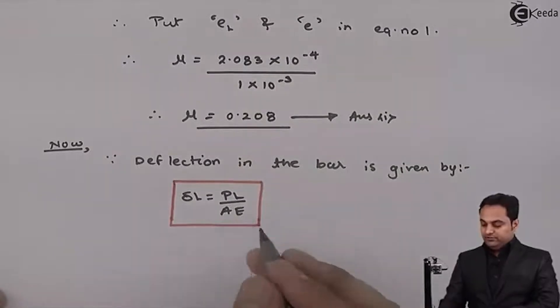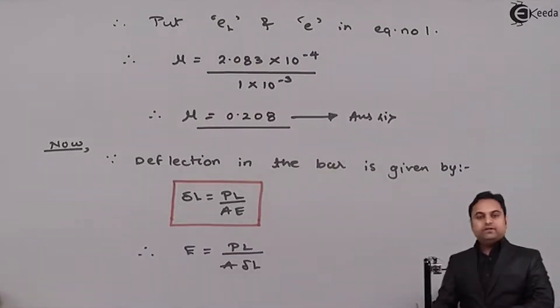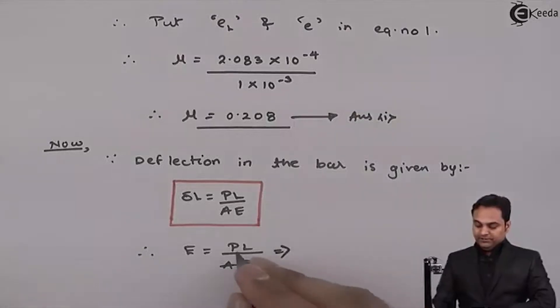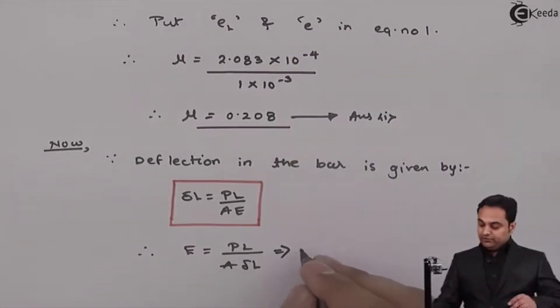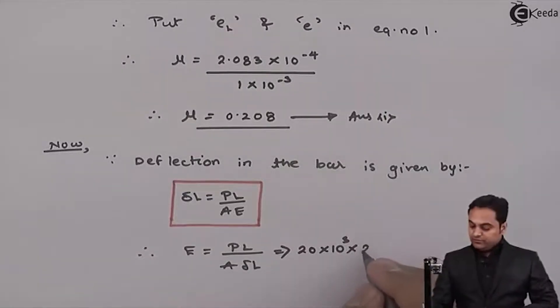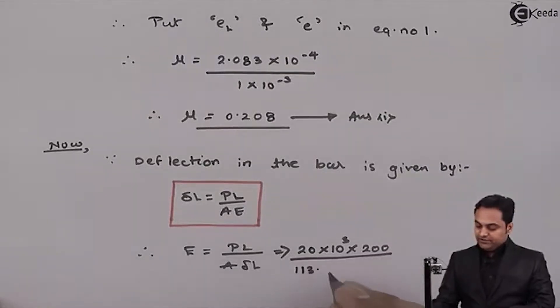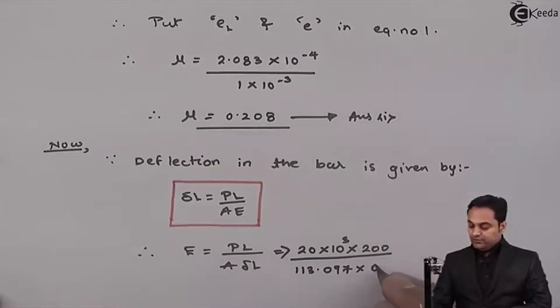Here we want the value of E. So I'll shift Young's modulus, that is capital E, on one side and PL upon A into delta L onto the other side. Putting the values, P is 20 kN, so it is 20 into 10 raised to 3 Newton. Length is given as 200 mm. Area we have found out in the data, 113.097, and change in length is 0.2.